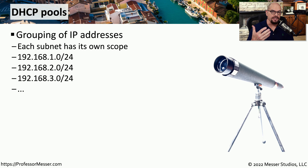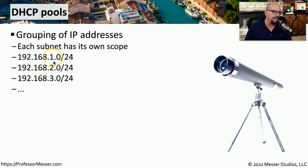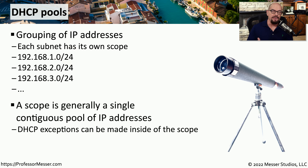When the DHCP server assigns an IP address to a device, it's choosing an available address from a pool of addresses that you've previously configured inside of the DHCP server. For example, you might have one subnet pool that is 192.168.1.0/24, which means anything in that subnet can be assigned as an IP address from the DHCP server. These IP scopes are usually a very large contiguous range of IP addresses, and your DHCP server simply pulls from any available address inside of that range.